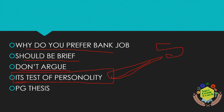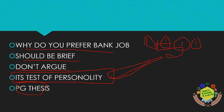Normally there are five members in the panel: one psychologist, one bank person, one agriculture specialist, and others. The psychologist will observe how you entered and how you are answering. Don't shake; be confident. If you have done an M.Sc. in agriculture, be prepared to tell everything about your PG thesis.